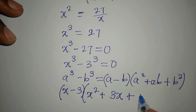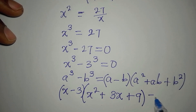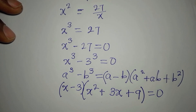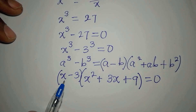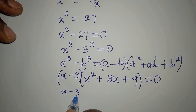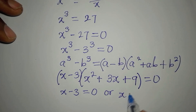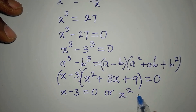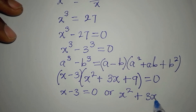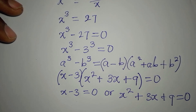Then b squared is 3 squared, which is 9. So the full factored form is (x minus 3)(x squared plus 3x plus 9) equals 0. Either factor can equal zero.